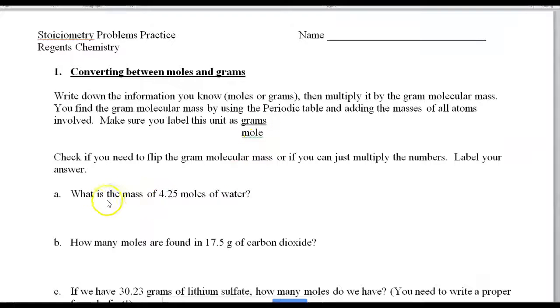So, let's take a look at the first one. What is the mass of 4.25 moles of water? The first thing I'm going to do is I'm going to write down 4.25 moles of water. Now, the water, of course, H2O, 1.01 plus 1.01 plus 16 is 18.02 grams per mole.